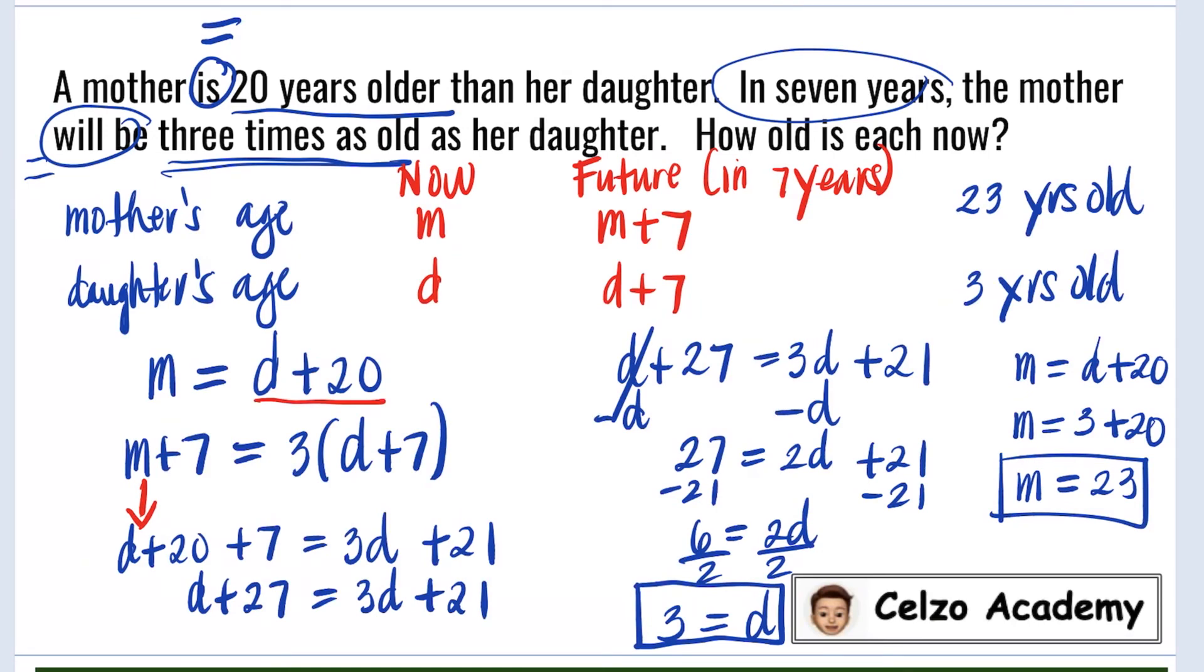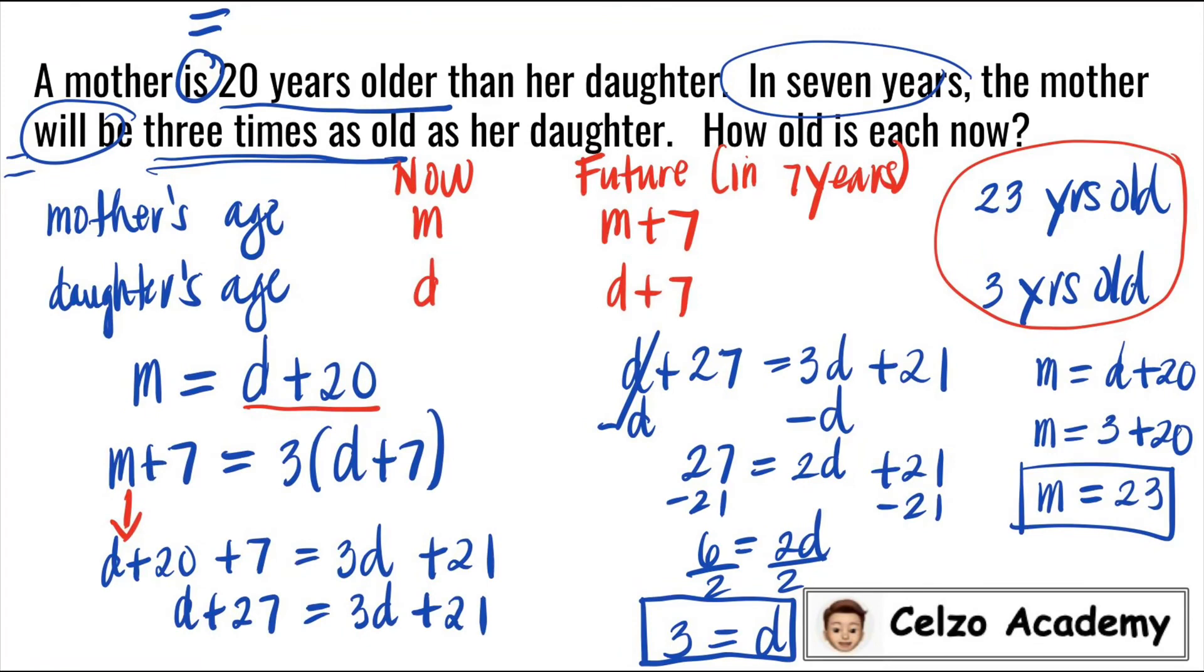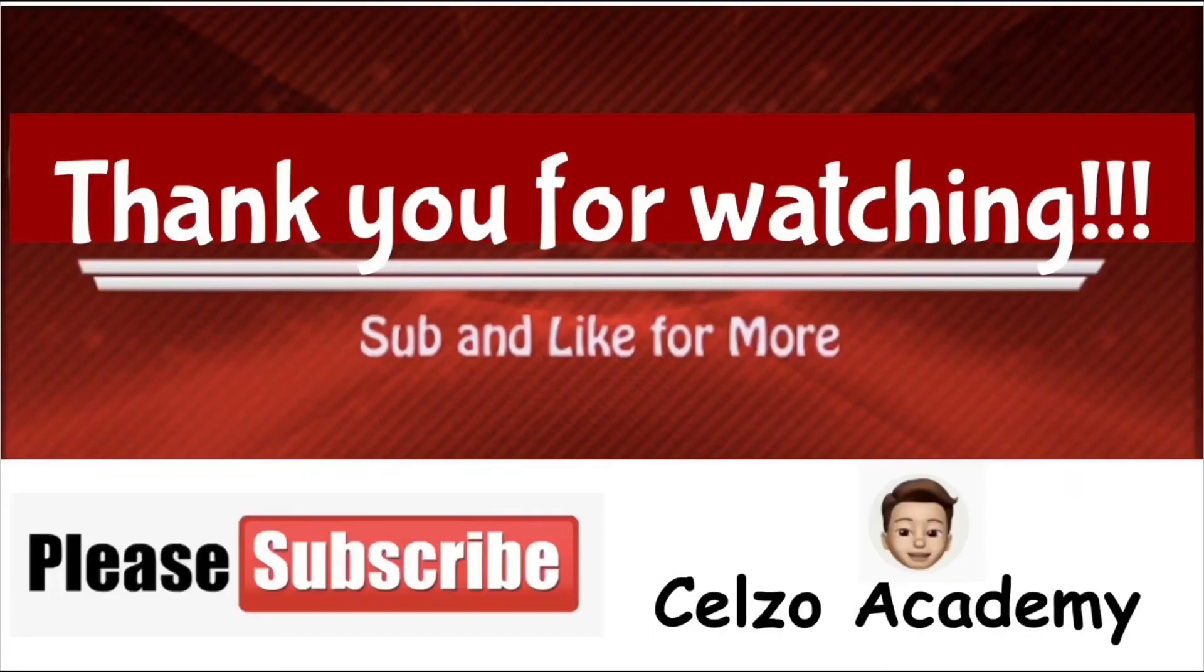So the answer is right, that the mother's age is 23 years old now, and daughter's age is 3 years old now. Thank you for watching, and please consider subscribing to my channel at Celso Academy.